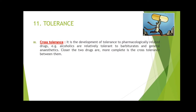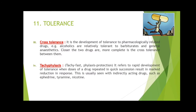This is known as cross tolerance. Next is tachyphylaxis. It is derived from the word where 'tachy' means fast and 'phylaxis' means production. It refers to rapid development of tolerance when doses of a drug repeated in quick succession results in marked reduction in response. This is usually seen with indirectly acting drugs such as ephedrine, tyramine, and nicotine. Tachyphylaxis is somewhat similar to acquired tolerance but not actually acquired tolerance. Acquired tolerance means after six months or after one year tolerance will develop, but in tachyphylaxis within one week or two weeks tolerance may occur. That's why we call it 'tachy' — tachy means fast tolerance.